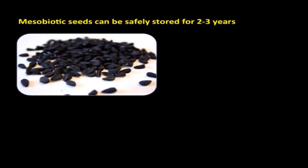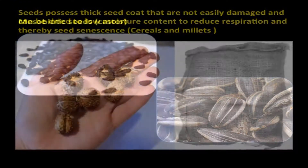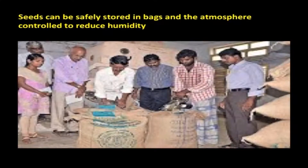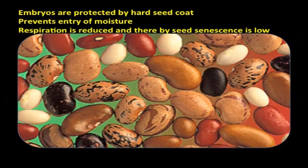Mesobiotic seeds can be safely stored for two to three years. These seeds possess a thick seed coat that is not easily damaged and can be dried to low moisture content to reduce respiration and thereby seed senescence. Cereals, millets, castor, groundnut stored in pots, mustard seeds, and sunflower seeds are mostly mesobiotic. They can be safely stored in bags with a controlled atmosphere to reduce humidity. Macrobiotic seeds are those that can be safely stored for more than five years. These seeds possess an exceptionally hard seed coat that is impermeable to moisture. Upon drying, the embryos are protected by the hard seed coat that prevents entry of moisture, thus reducing respiration and slowing senescence.